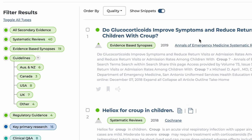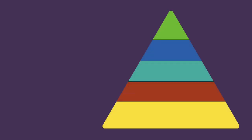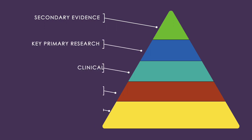One thing you might have noticed is the use of colours. These appear under each result and in the search filtering area. This reflects an important concept in evidence-based medicine: the evidence pyramid. This helps to convey that some evidence is better than others. In this pyramid, the high quality secondary evidence is at the top and is coloured green, and as you work down the pyramid the colours change, reflecting the different evidence types.